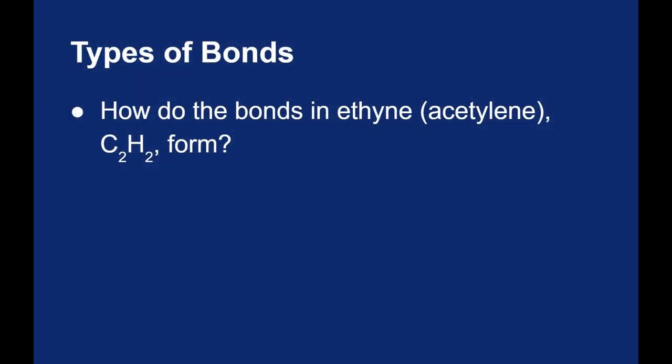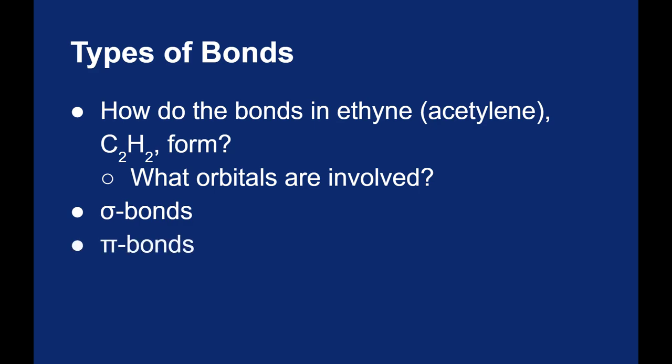Let's try this with ethyne, or what used to be known as acetylene. Ethyne is C2H2, and I want to figure out what orbitals are involved, and then we can figure out how many sigma bonds and how many pi bonds are present.